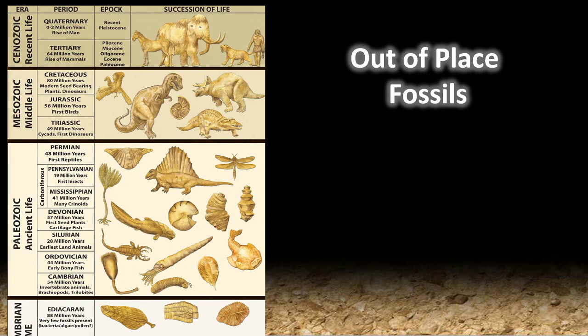Instead of transitional ancestors, what we find in the fossil record are the same distinct groups we find in living populations. Despite an enormity of effort, the primitive ancestors of the various phyla have not been found in the fossil record, nor can evolutionists connect the phyla to each other by fossil forms. There are other problems with the evolutionist interpretation of the fossil record too, like out-of-place fossils.